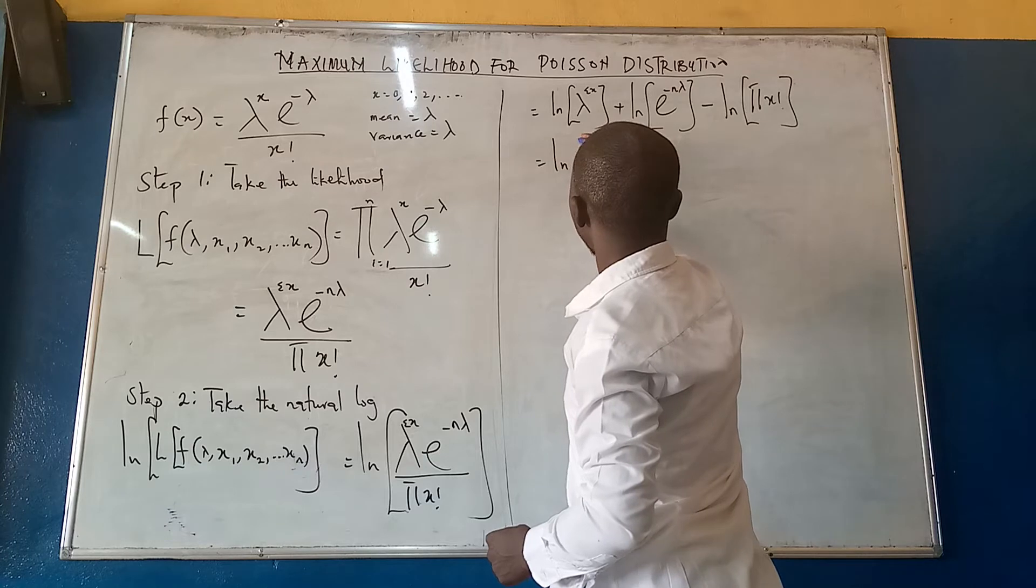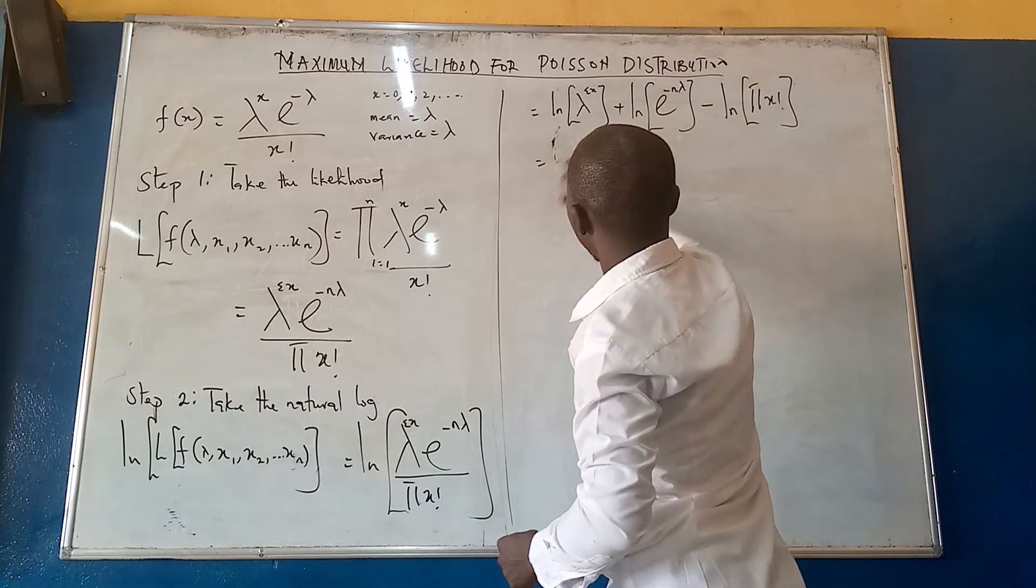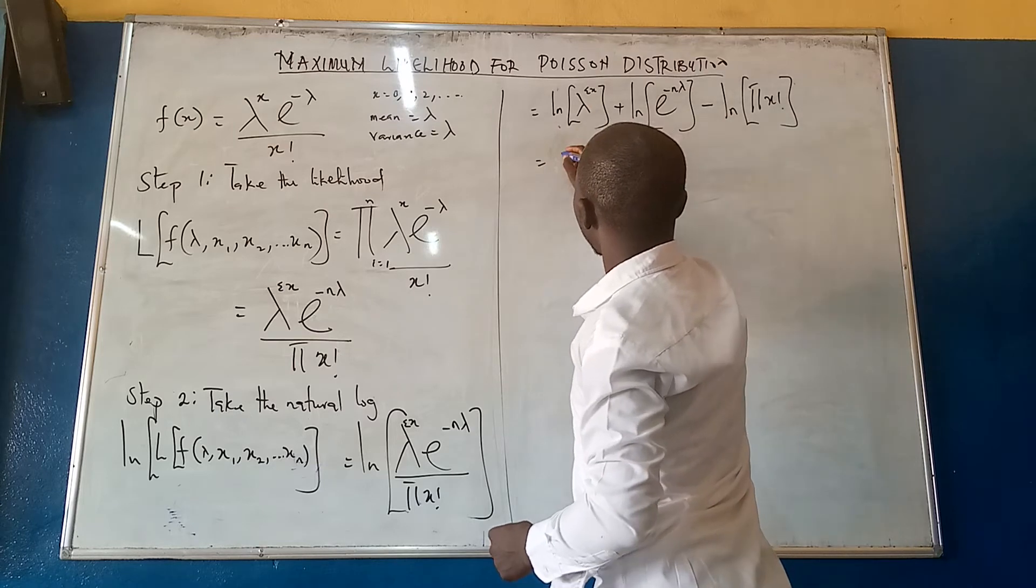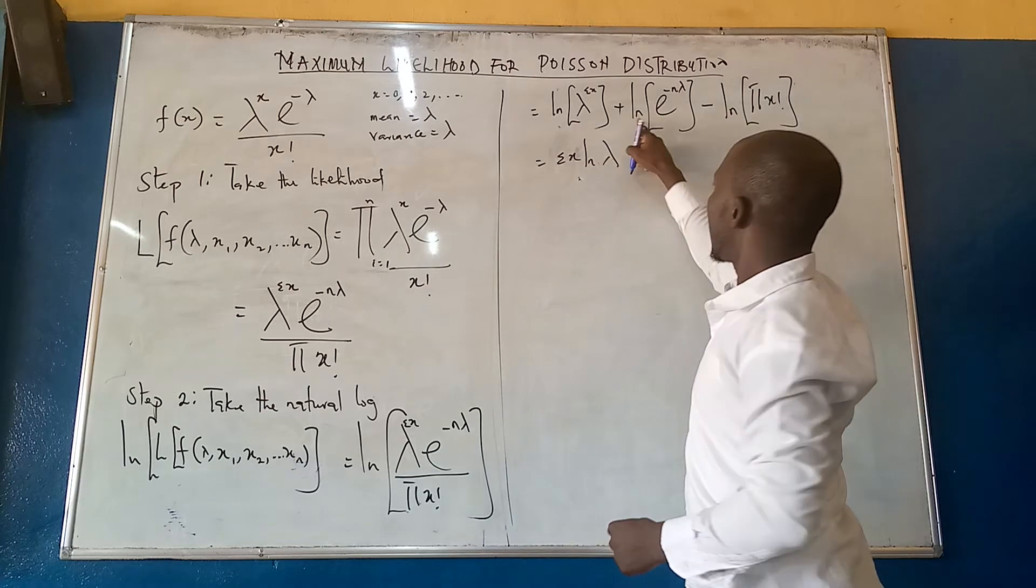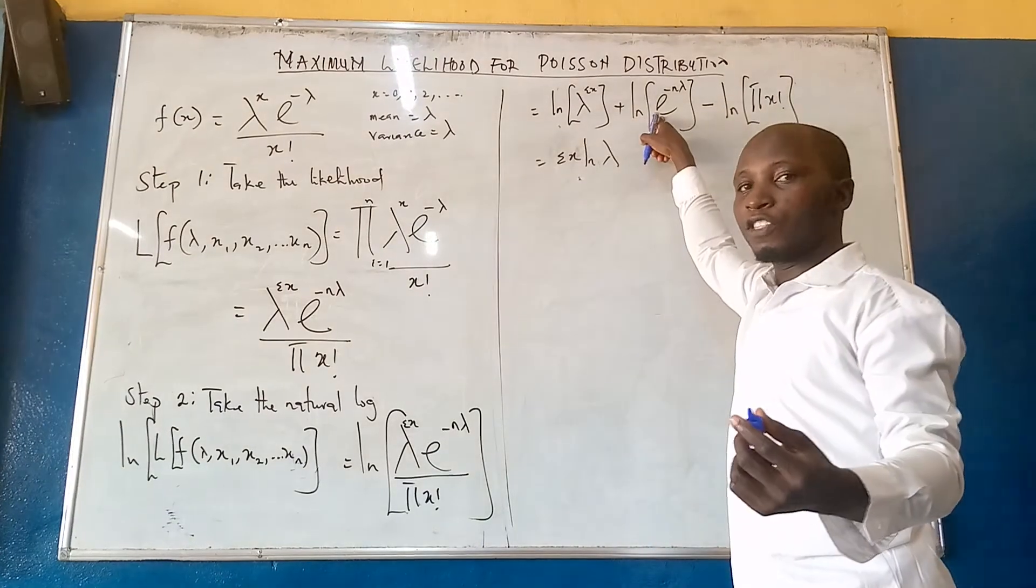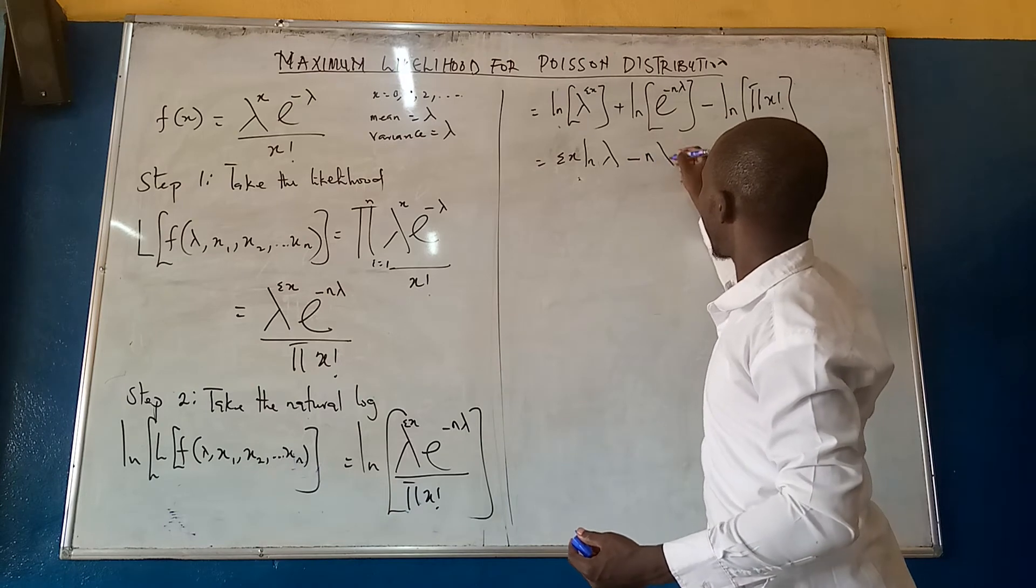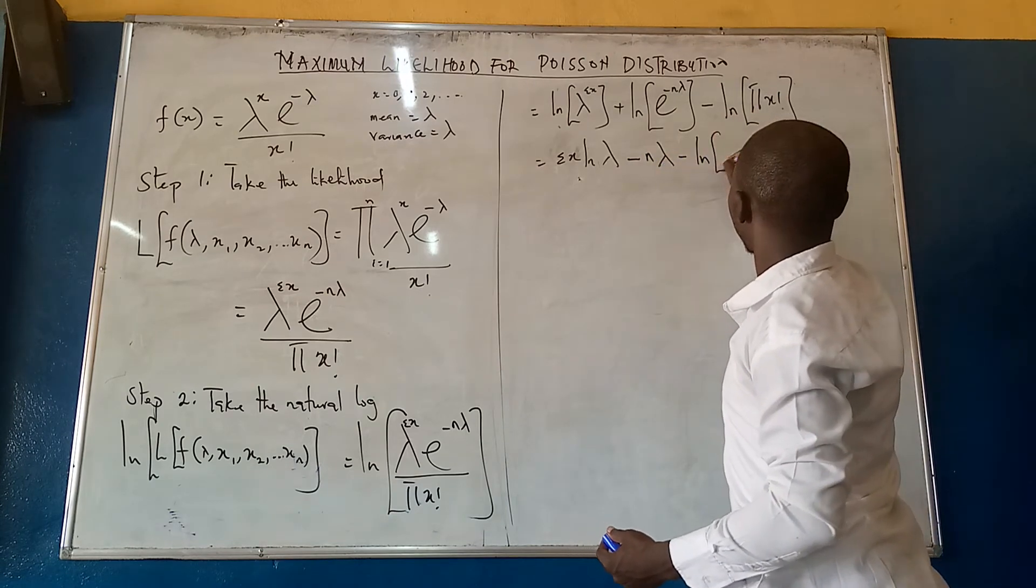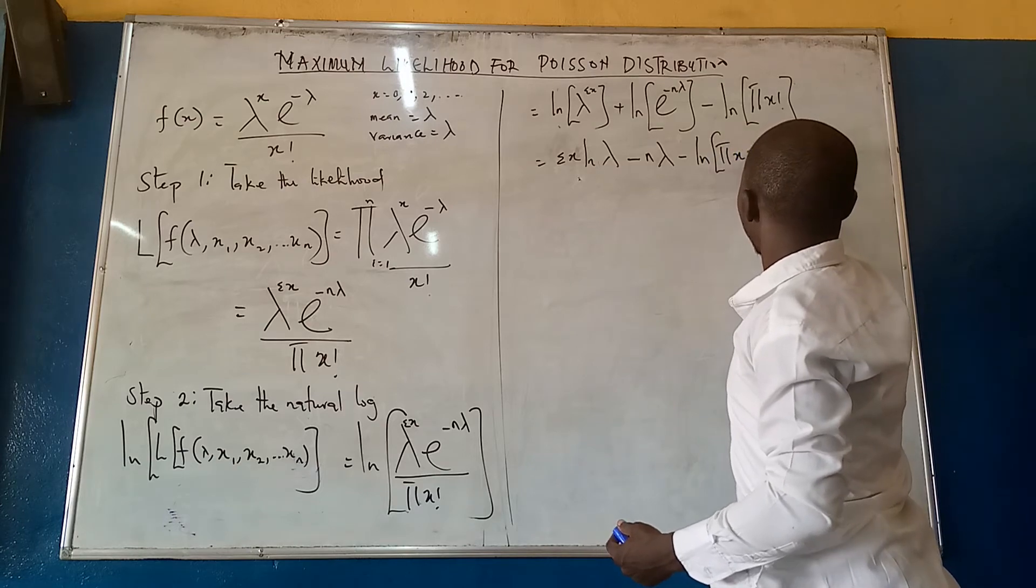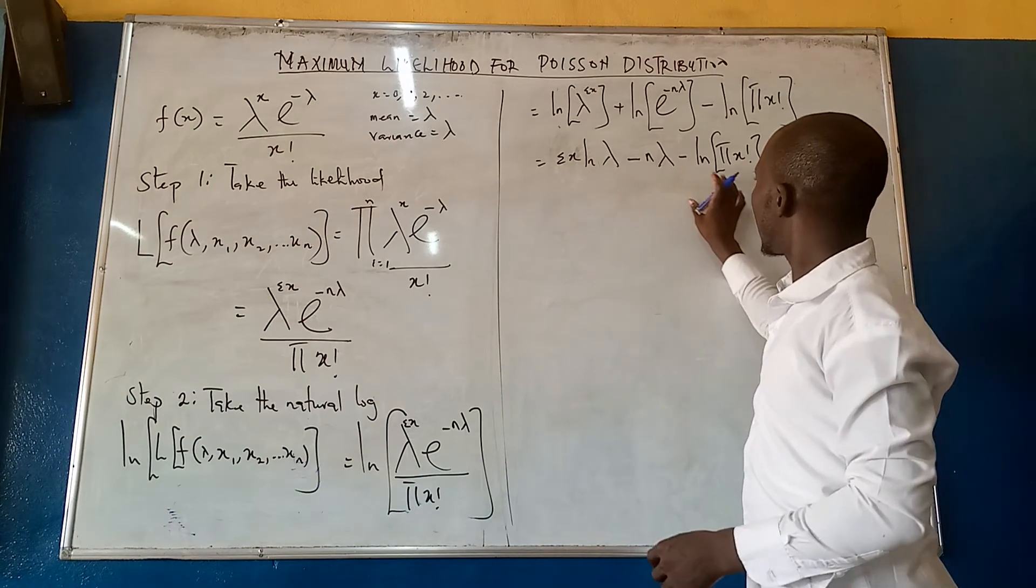Now we have this, we can write this as summation x ln lambda. Here is the inverse of exponential, so these two cancel, now we are going to have minus n lambda, then minus ln of x factorial. Now that we simplify this, we will move to step 3.